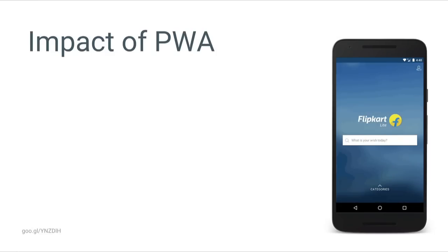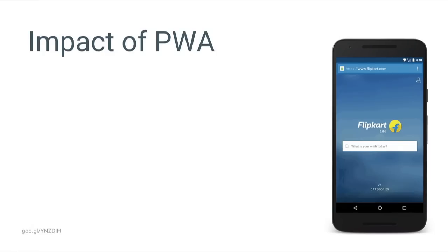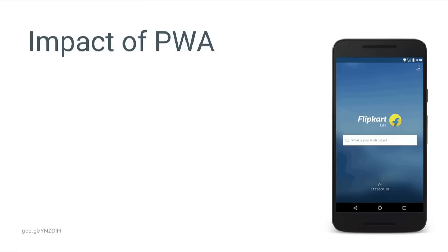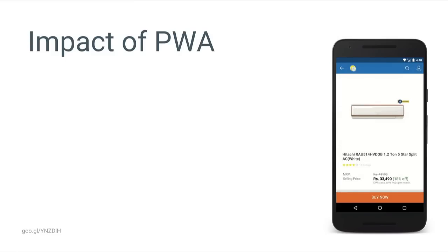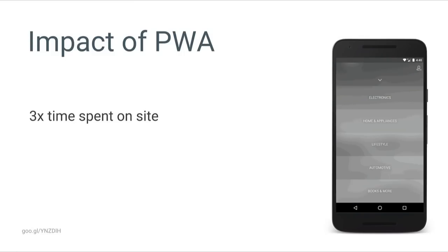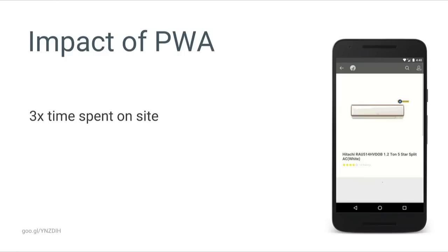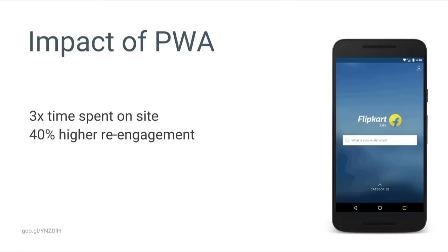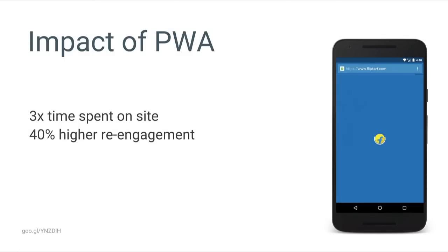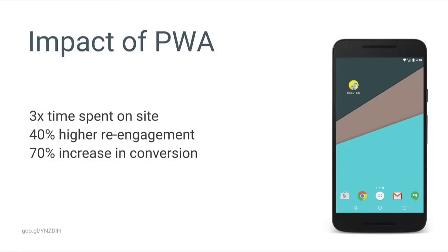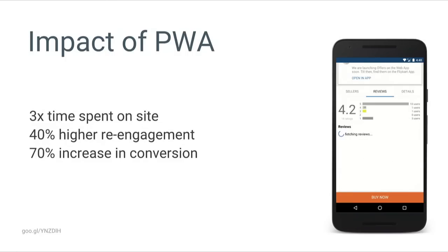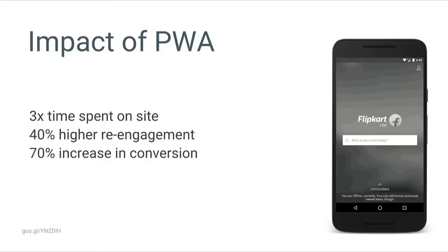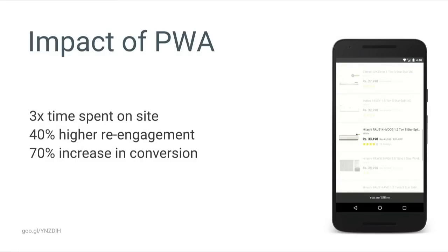Flipkart, a top e-commerce site in India, built out a progressive web app experience. The results were impressive: users spend three times as long on the PWA compared to their previous mobile web experience, there's 40% higher re-engagement, and most importantly for an e-commerce site, they saw a 70% increase in conversion compared to their previous mobile website.